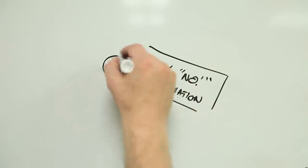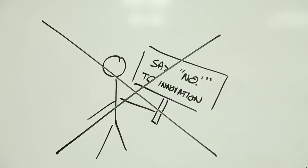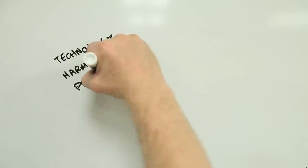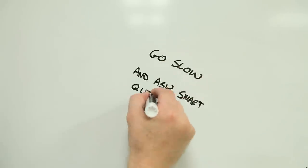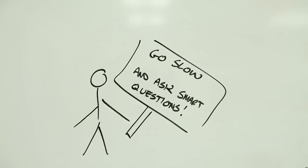So the precautionary principle is not about stopping innovation or even putting the brakes on technological progress. Instead, it's a go slow and ask smart questions principle to be applied where there are indications of potentially serious consequences if we don't get it right. Is this good or is it bad?